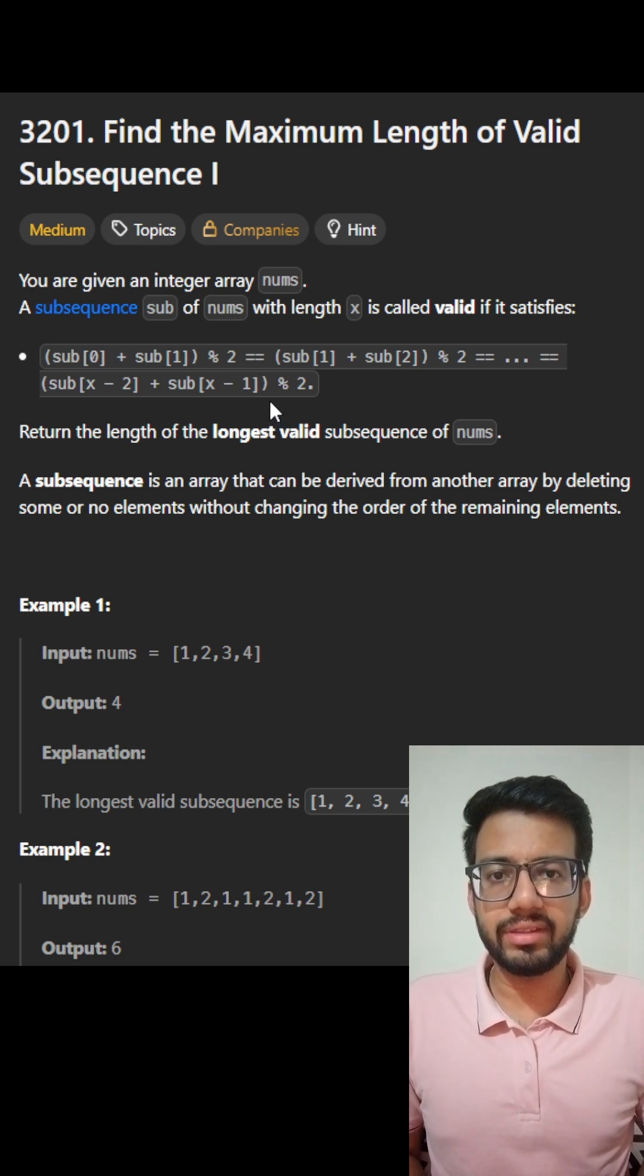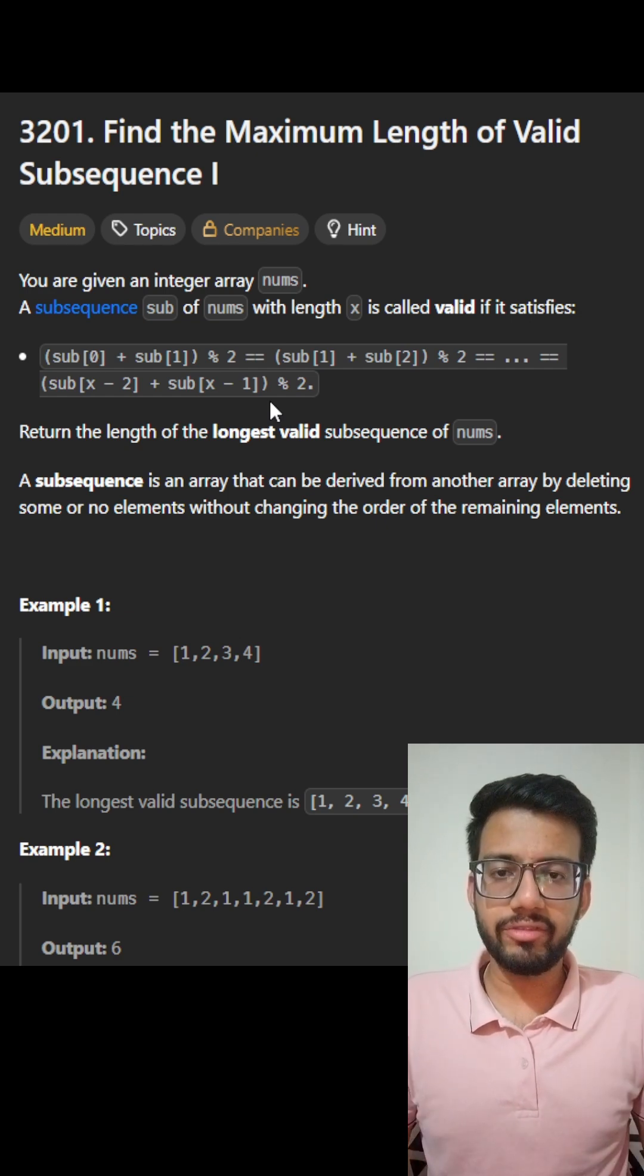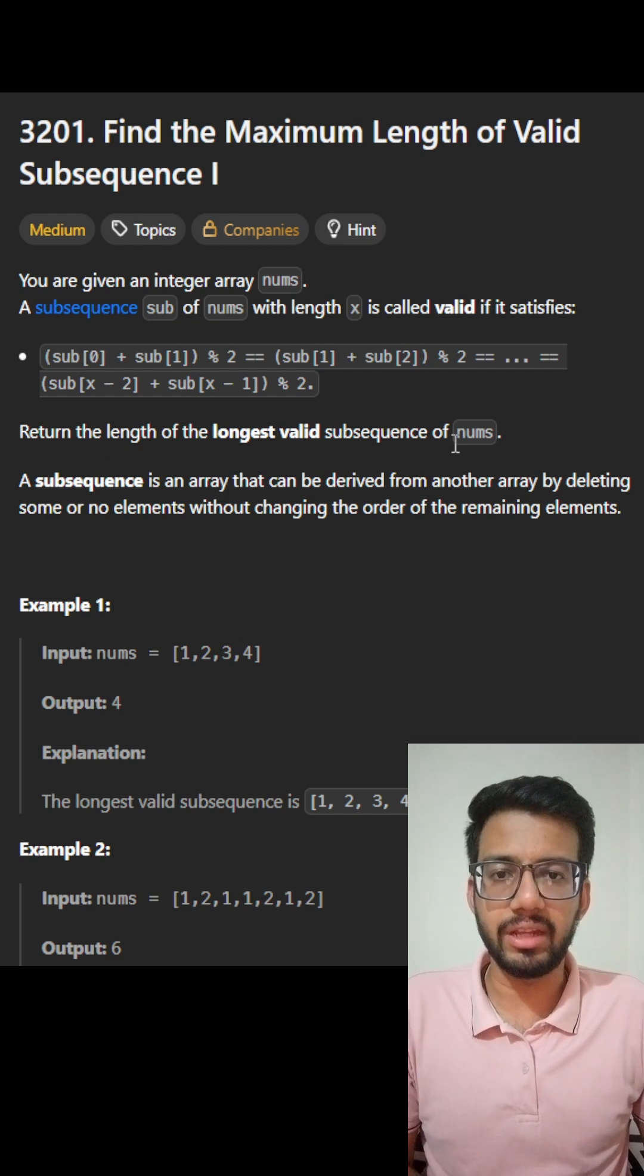the sum of all the adjacent elements is either even or odd. And we need to find the longest valid subsequence of the given array nums.